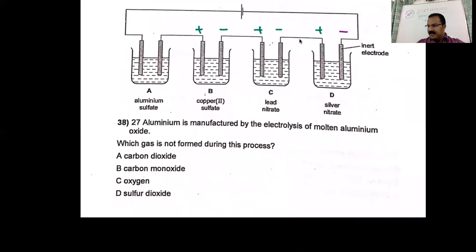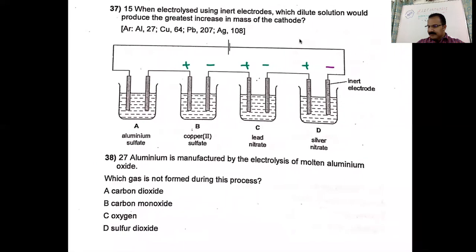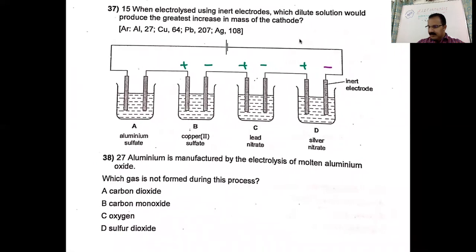Aluminum is manufactured by electrolysis of molten aluminum oxide. Which gas is not formed during this process? The gases formed are carbon dioxide, carbon monoxide, oxygen, and fluorine from cryolite. Sulfur dioxide is never formed in this reaction — that is the correct answer.